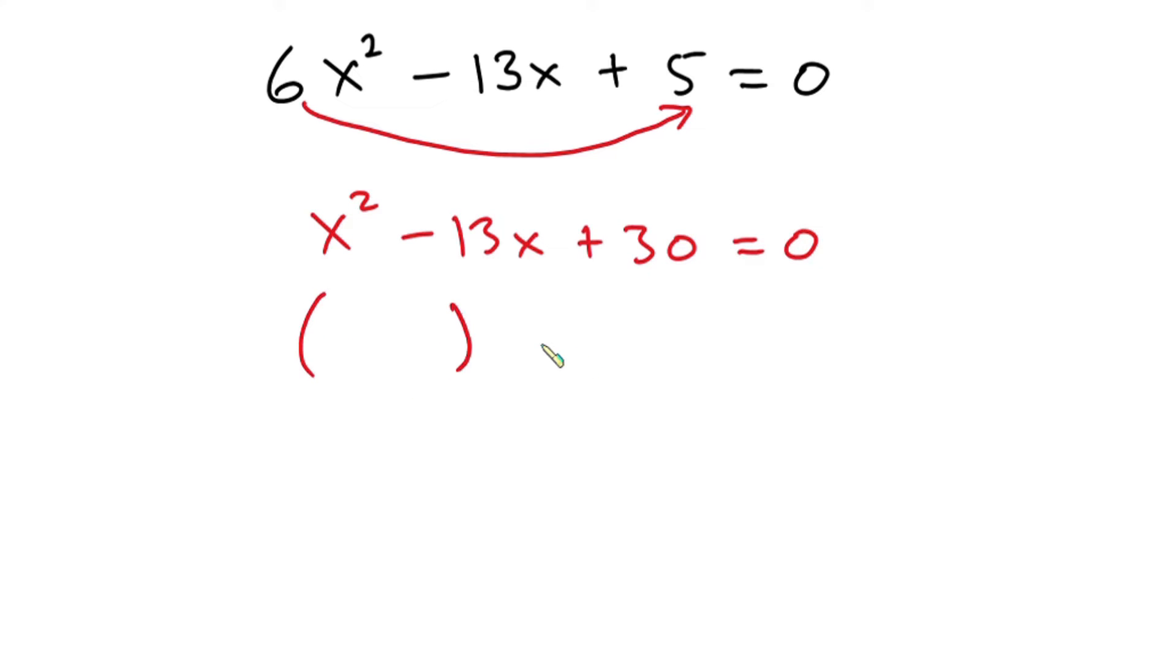Now from here we're going to have two factors. What times what to give you x squared? We have x times x. Then what times what to give you positive 30, then their sum is going to be negative 13. And the factors are negative 10 and then negative 3.